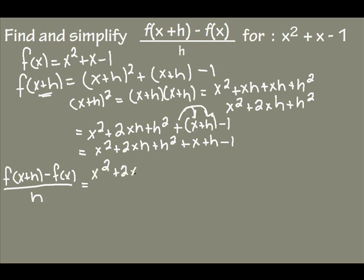x squared plus 2xh plus h squared plus x plus h minus 1, minus f of x. And if we look way back up here, f of x is x squared plus x minus 1, so put that in there.